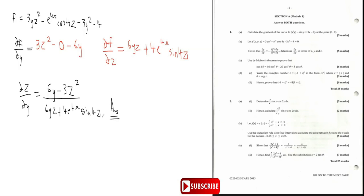The next part of the question says: using De Moivre's theorem, prove that cos(5θ) equals 16cos⁵(θ) minus 20cos³(θ) plus 5cos(θ).